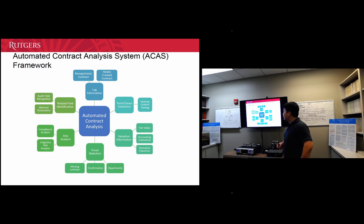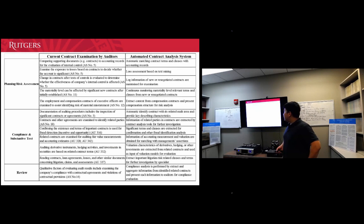So to extend our process into the whole audit practice, we propose an automated contract analysis system, the ACAS framework, to help auditors better incorporate text mining techniques into audit procedures. It has six main functions, and we implement that into the already existing auditing standards. In the compliance and risk assessment stage and also in the review stage, text mining techniques can be used to extract information for further investigation.